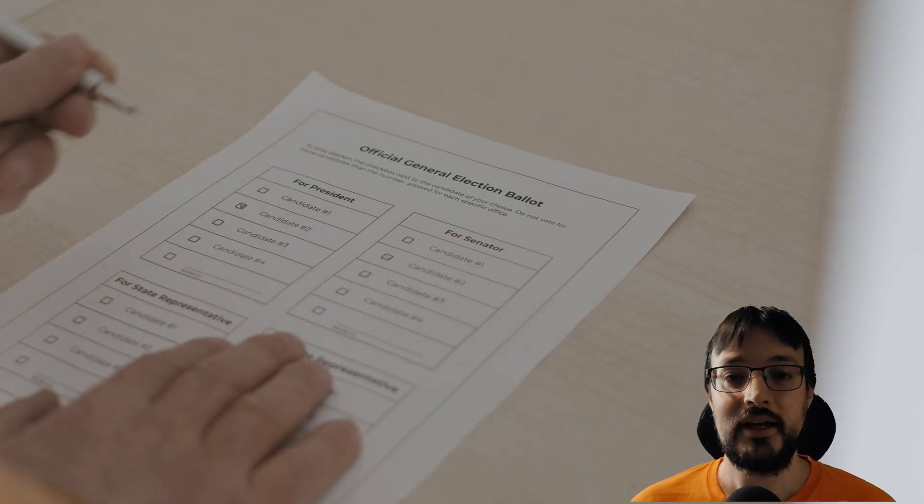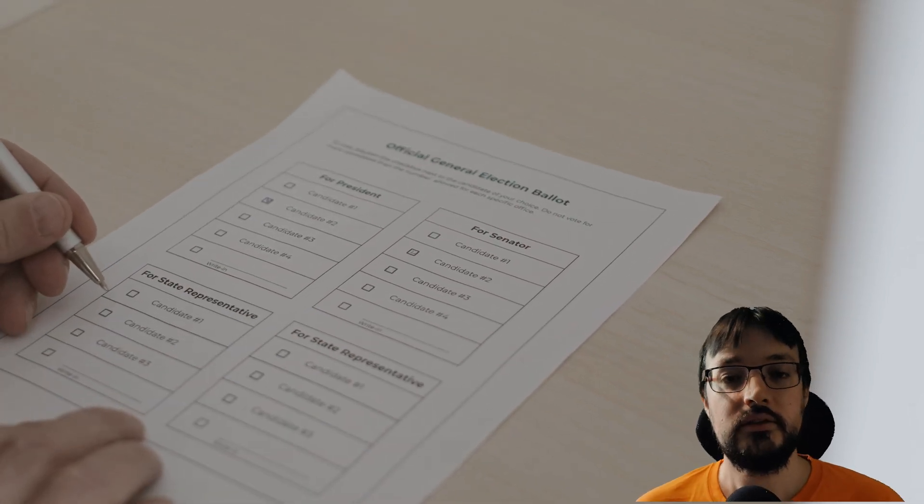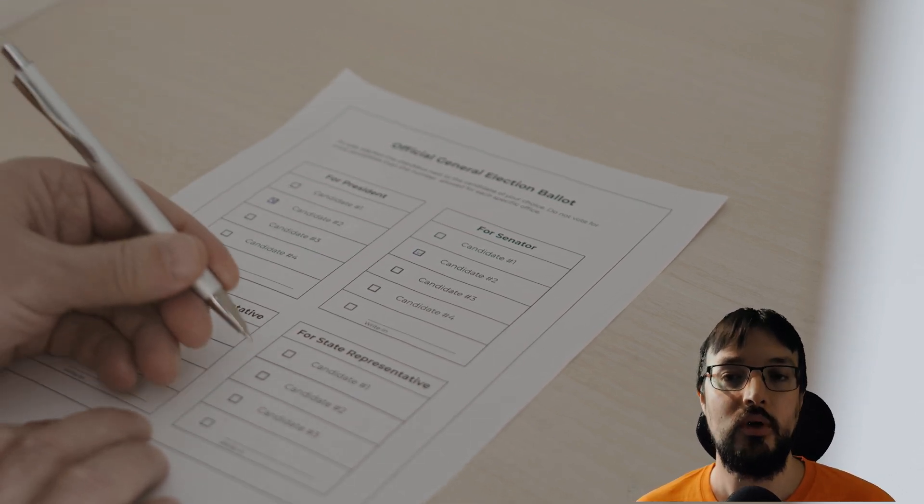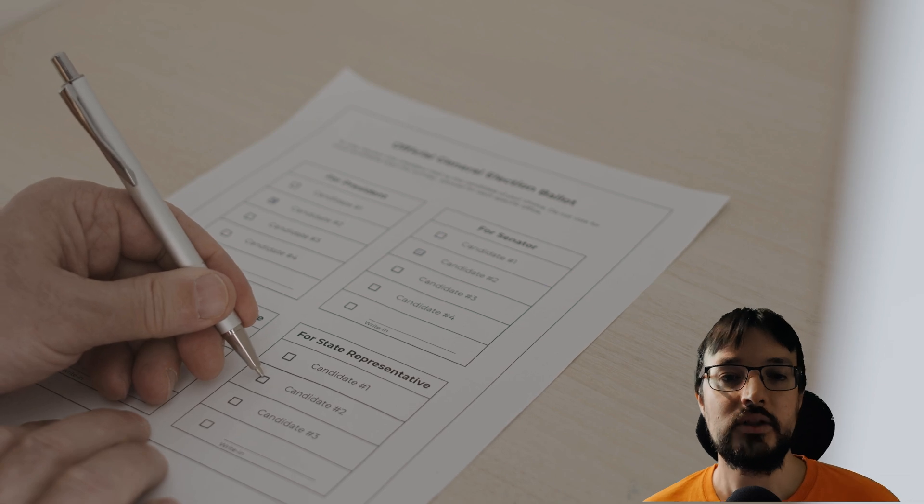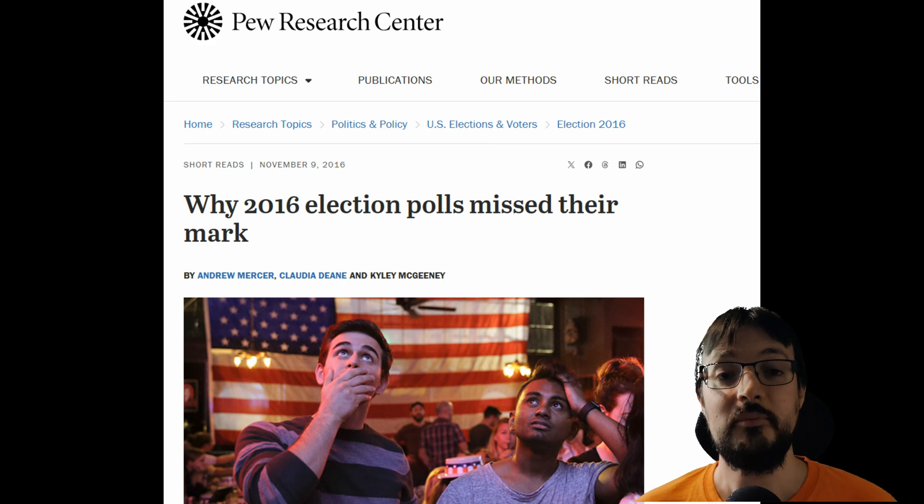This is Dr Giordano Scarciotti. I'm an academic at Imperial College London working on control engineering and modeling. Today I want to create, together with you, a mathematical model that replicates the process of polling. To construct this model I will use the lessons learned from the 2016 US presidential election and the Brexit referendum. I will start with a very simple model and I will add layers a bit at a time to explain how uncertainty affects the results of the polls. I will then conclude the video talking about the validity of a single poll, the validity of aggregated polls, and the way the news reports this information.